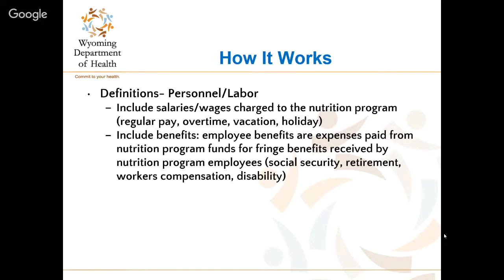There are four expense categories, similar to the grant application categories. First: Personnel and Labor. This includes salaries and wages charged to the nutrition program — regular pay, overtime, vacation, and holiday. Also included under Personnel are employee benefits, whatever benefits you may offer.